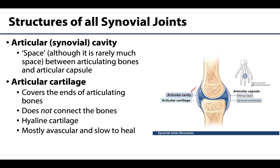All synovial joints will also have articular cartilage — the white portion seen in illustrations — covering the ends of the articulating bones. This cartilage is not what connects the bones; that is the articular capsule. The cartilage serves to provide protection and reduce friction within a synovial joint. Articular cartilage has a limited vascular supply and is therefore slow to heal after injury or wear and tear. It will be discussed in more detail when addressing osteoarthritis, as this area is very often affected.